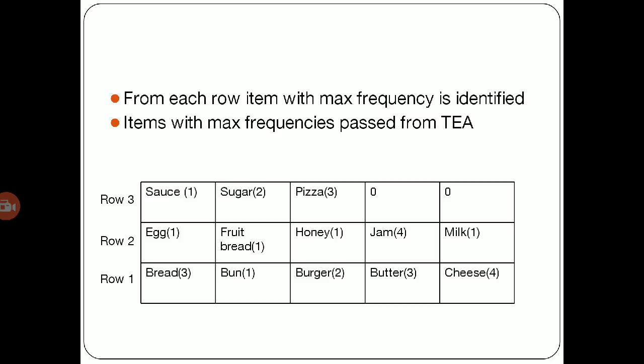What the Transaction Encoding Algorithm will do: In the first phase, it will identify each row item with the max frequency. As we know, we have identified the table of three rows. It is started from the reverse order, that is from row one, two, and three. And similarly, the items are written from the starting position—that is, bread, bun, burger, butter, cheese, etc.